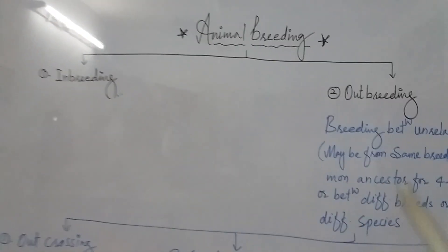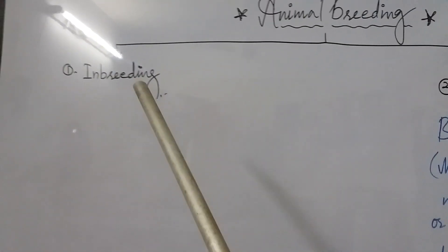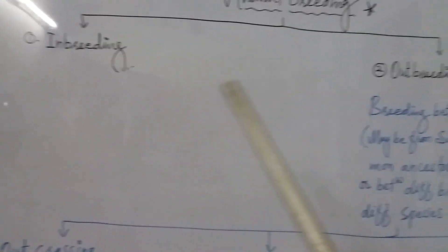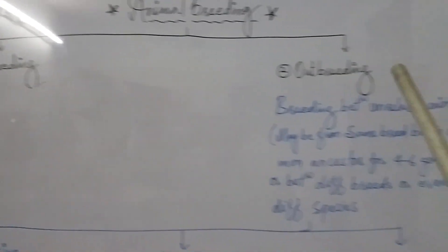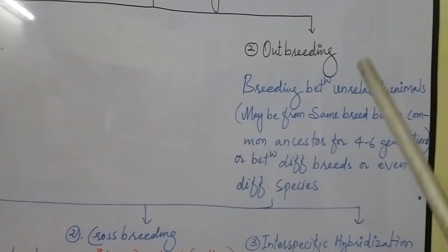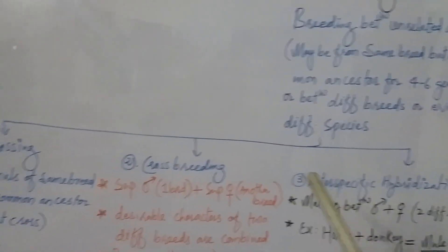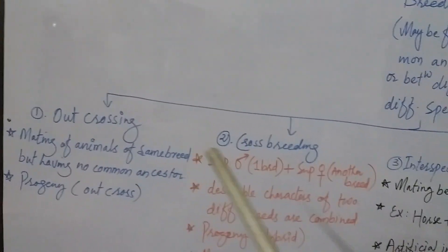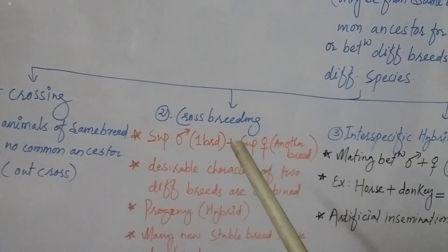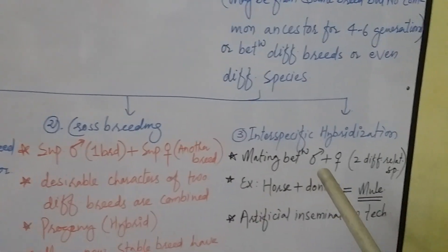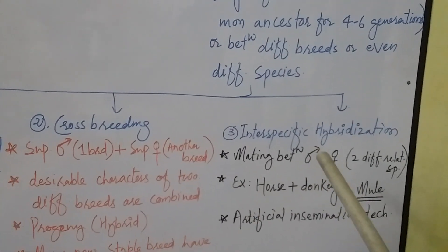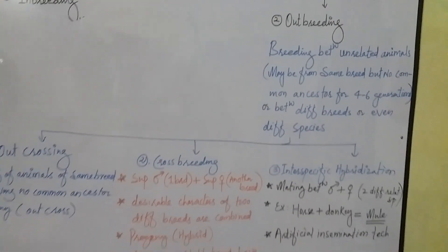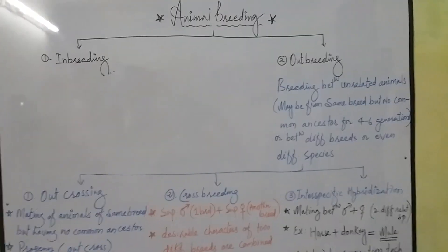So this is about animal breeding, which has two types: inbreeding and outbreeding. Outbreeding is further classified into out-crossing, cross-breeding, and interspecific hybridization. This is about animal breeding.